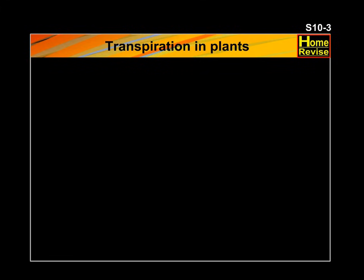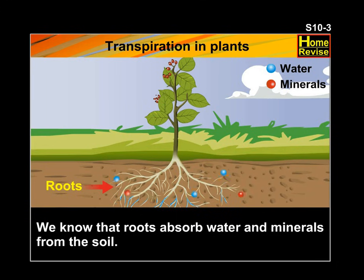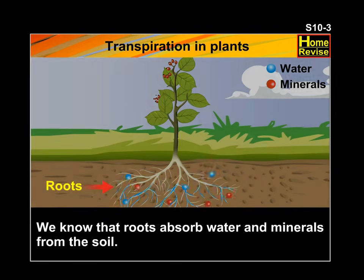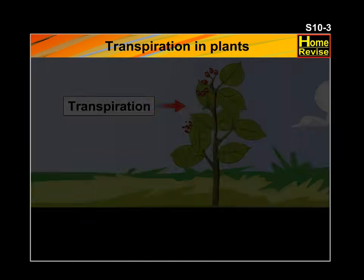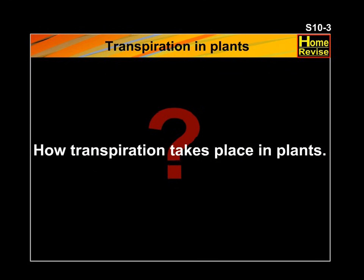We know that roots absorb water and minerals from the soil. But most of the water absorbed is lost in the form of water vapour into the air. This process is called transpiration. Let's learn about how transpiration takes place in plants.